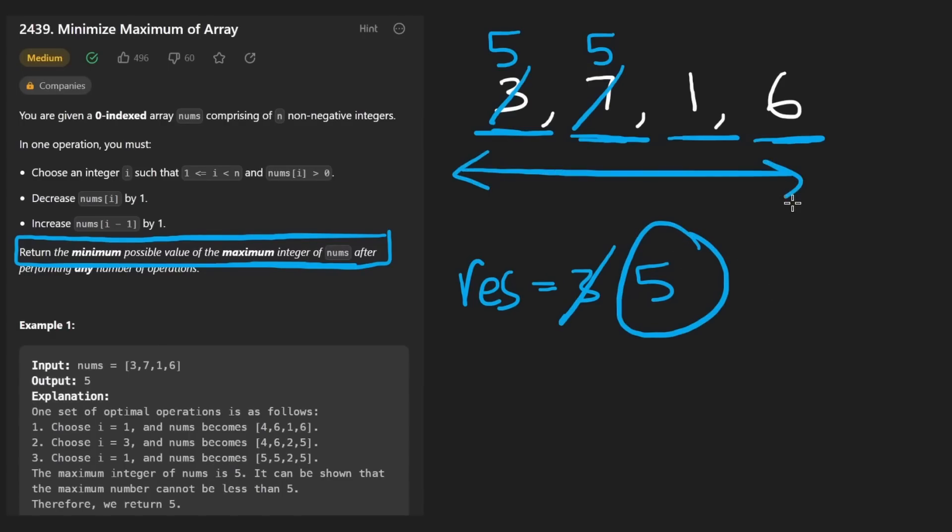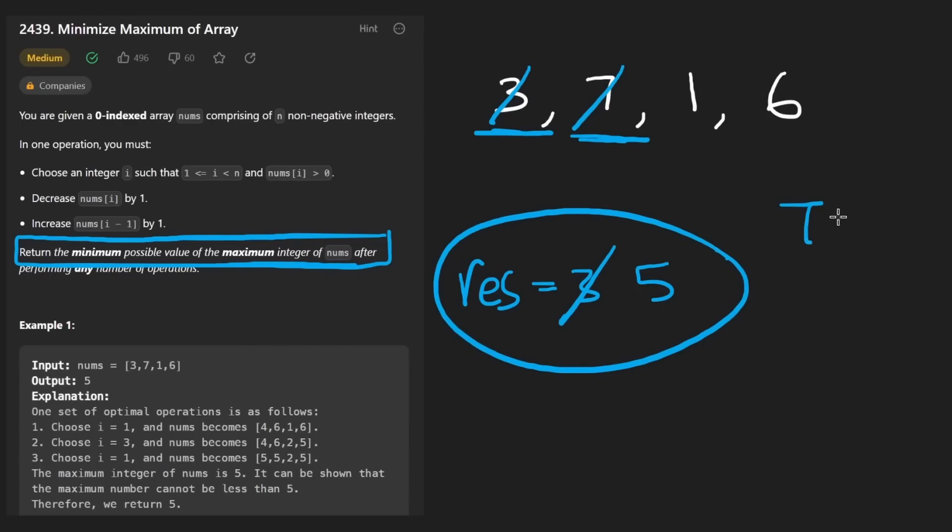Clearly, the time complexity of this is not bad. We're not using any advanced data structures. We're just iterating through the array, keeping track of the total and updating the result periodically. So the time complexity is big O of N. Memory complexity is big O of one. Now let's code this up.